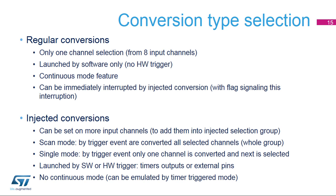Injected conversions have high priority. They can interrupt regular conversions immediately and start just after being triggered. Any of the input channels can be assigned into an injected channels group. There are two modes: scan mode and single mode. In scan injected mode, all channels from the injected channels group are converted from lowest to highest channel number when a trigger occurs. In single injected mode, only one channel from the injected channel group is converted per trigger, sequencing through channels. Injected conversions can be launched by software or by hardware from timers or an external pin. They cannot run in continuous mode, but this mode can be emulated using a periodic timer trigger.